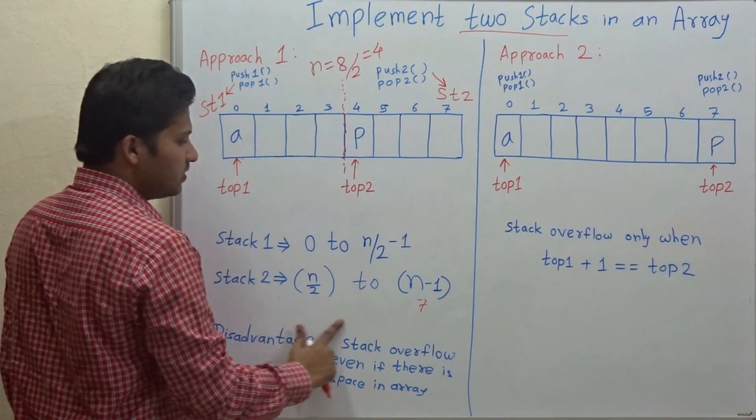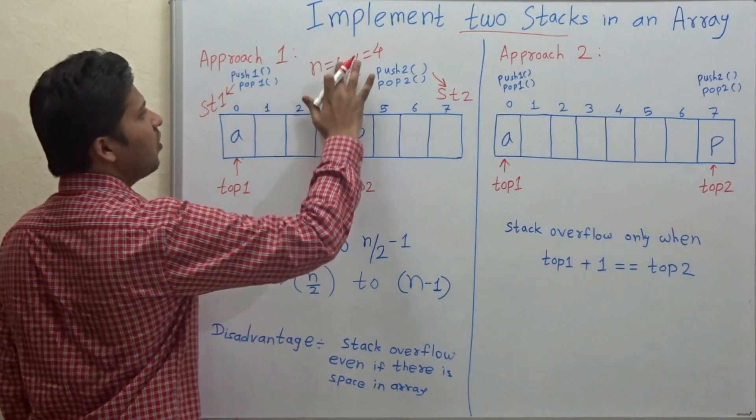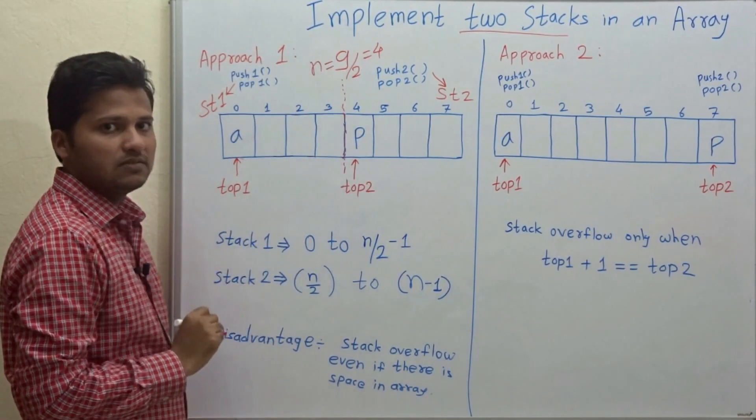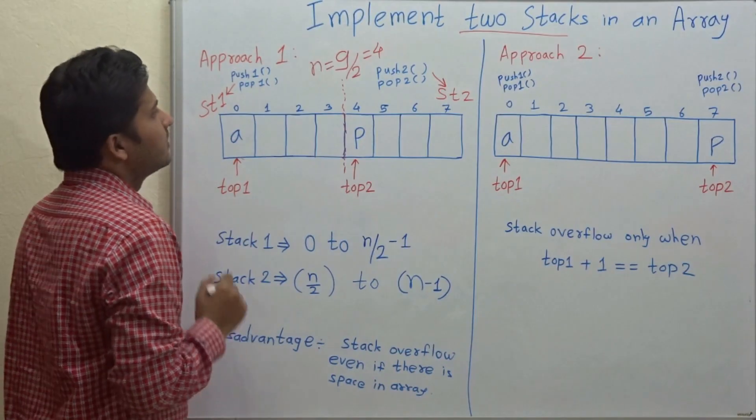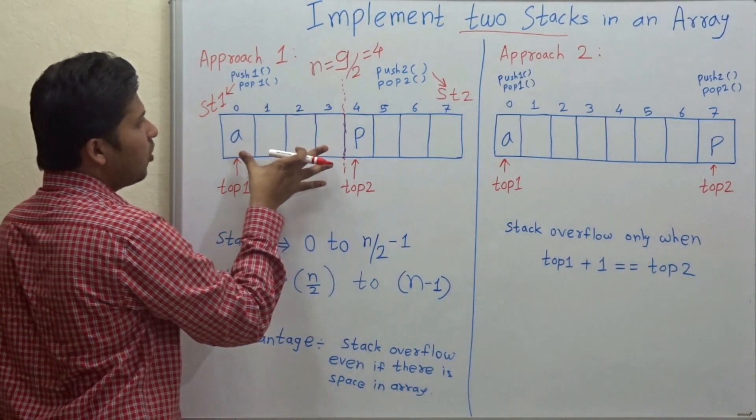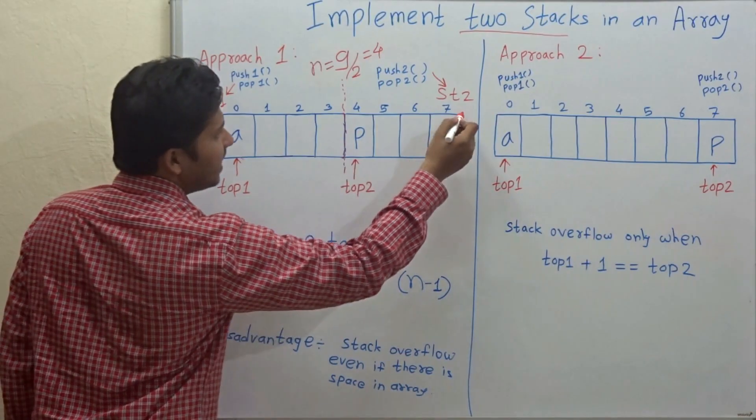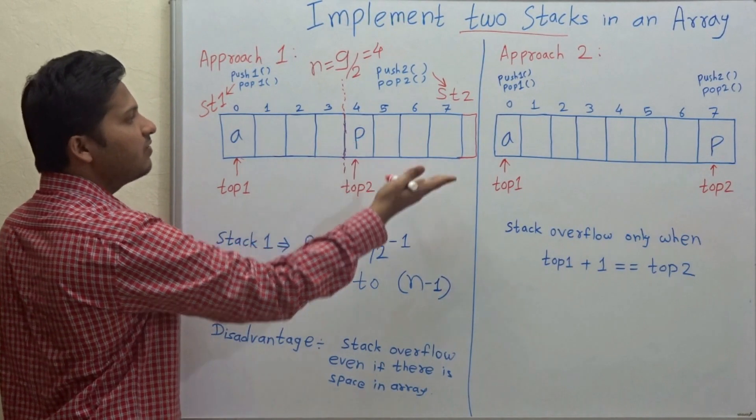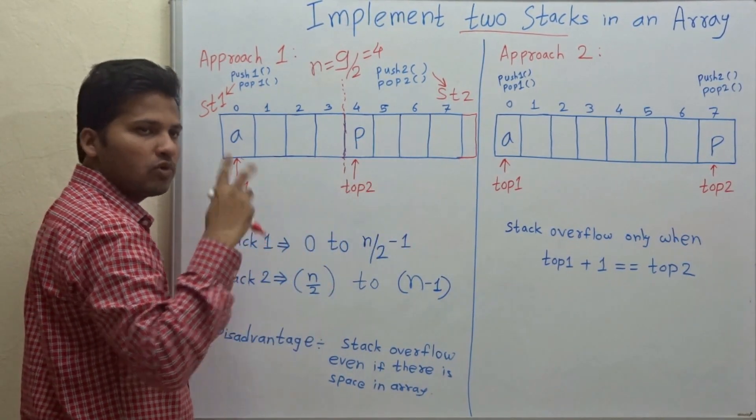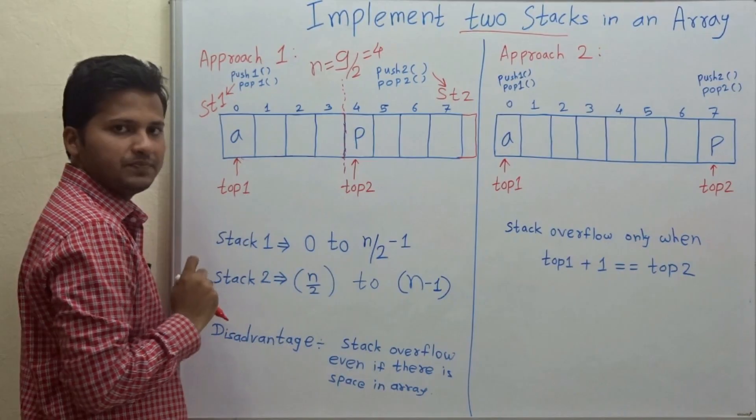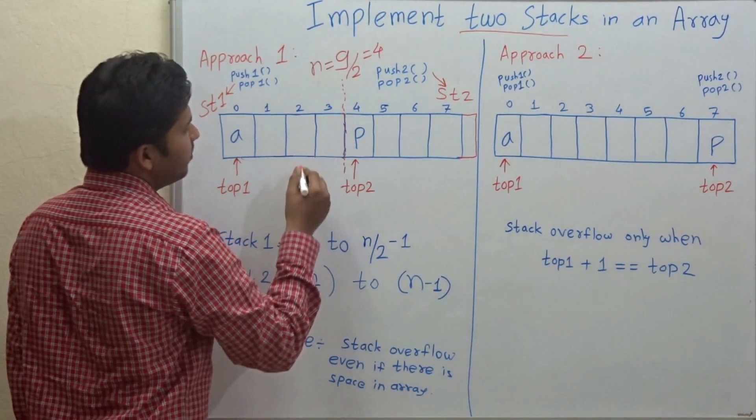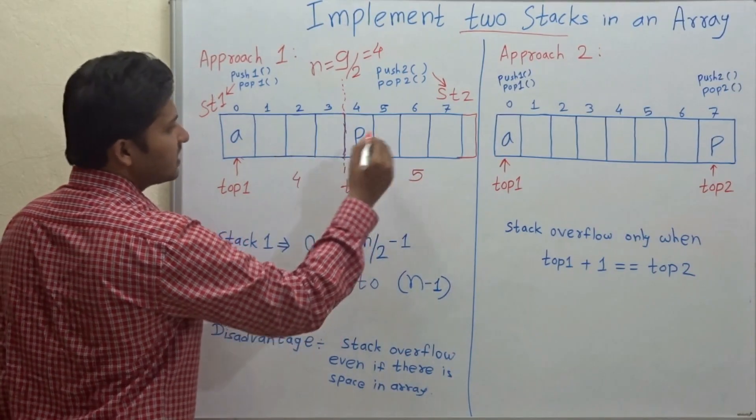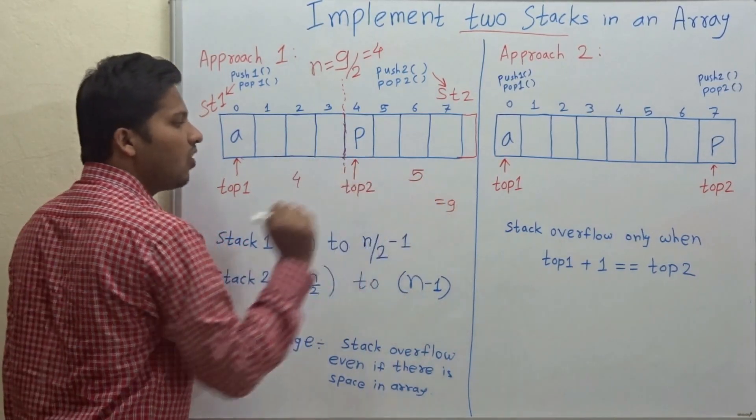Now, there is a question: if the size of the array is odd, suppose it is 9, then what will happen? So then, the first array will be of size 4 and the second array will have one extra cell. Means the second array will be of size 1 more than the first array. So the first array will be of size 4 and second will be of 5. If the total size is 9, that is odd size.